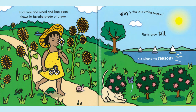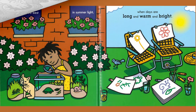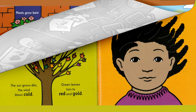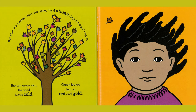Each tree and weed and lima bean shows its favorite shade of green. Why is this a growing season? Plants grow tall, but what's the reason? Plants grow best in summer light, when days are long and warm and bright.